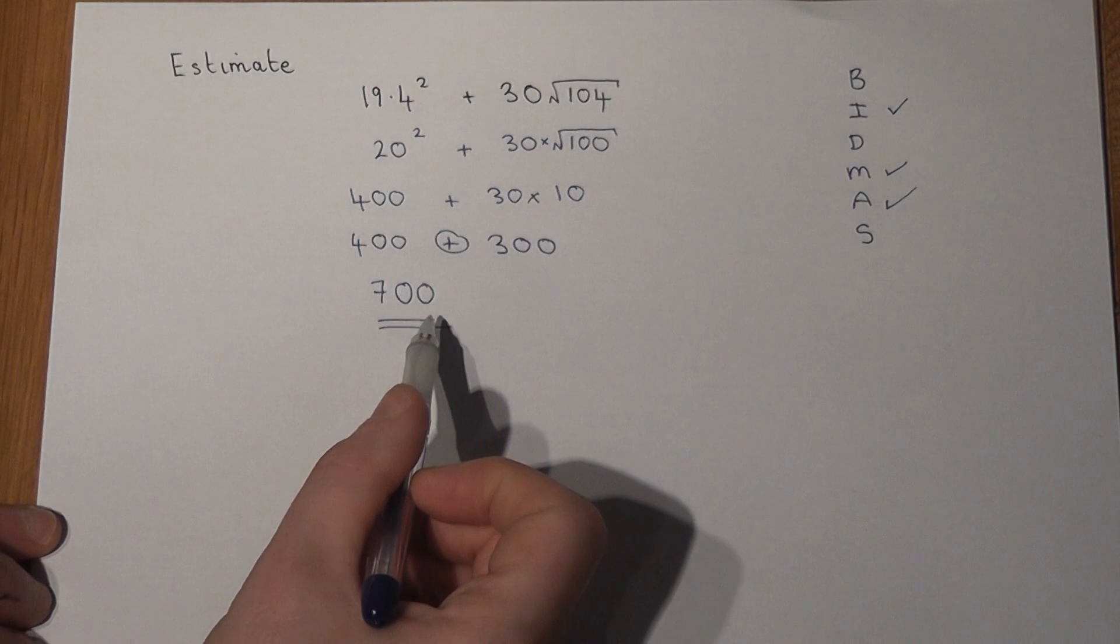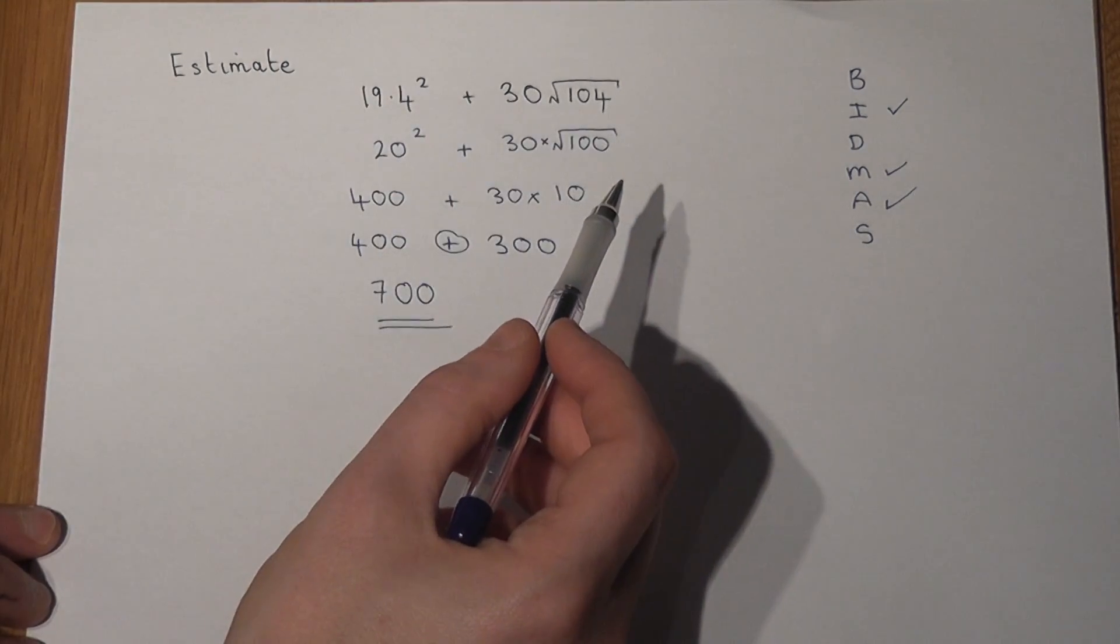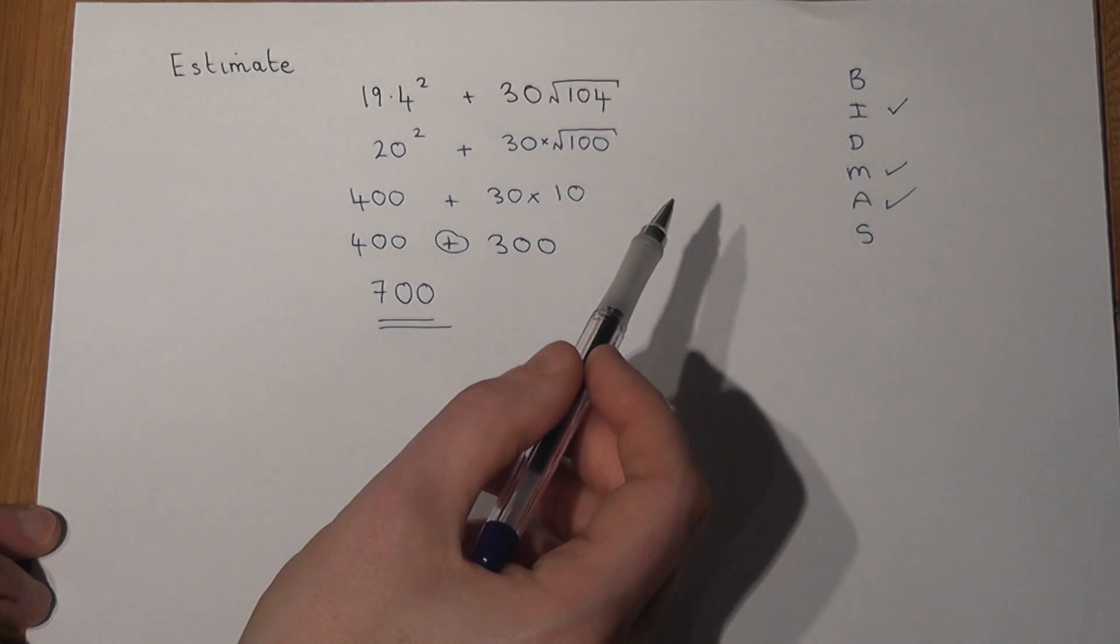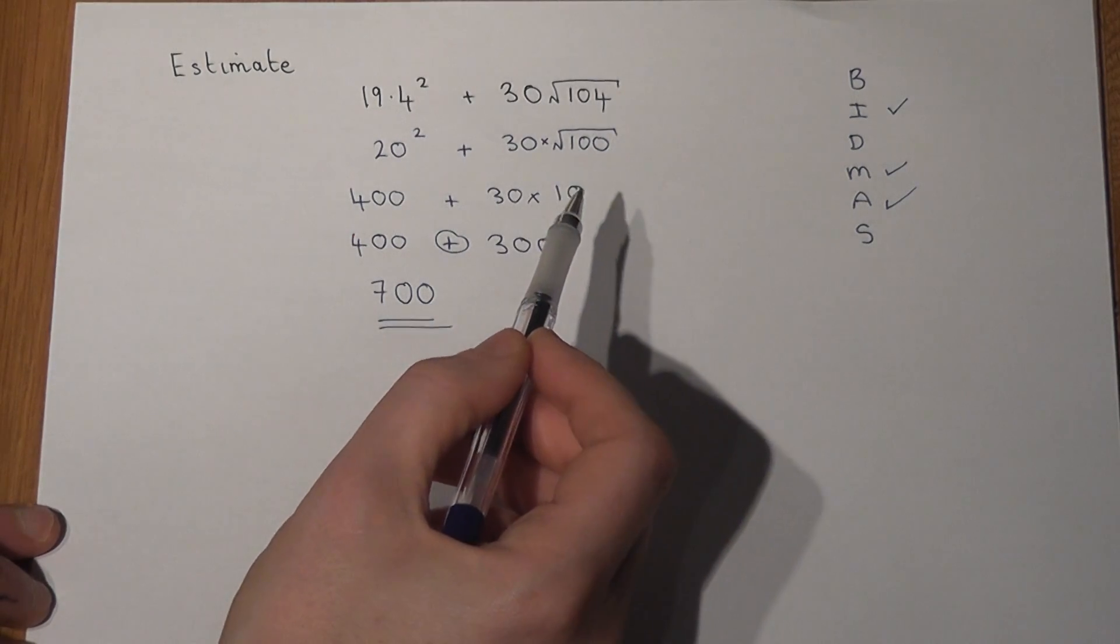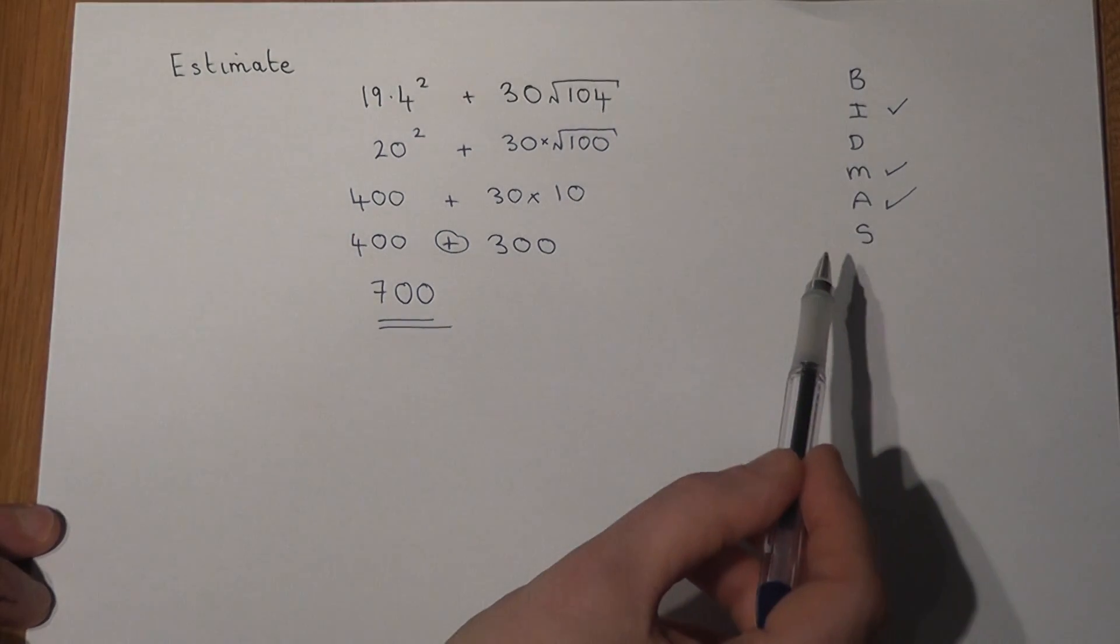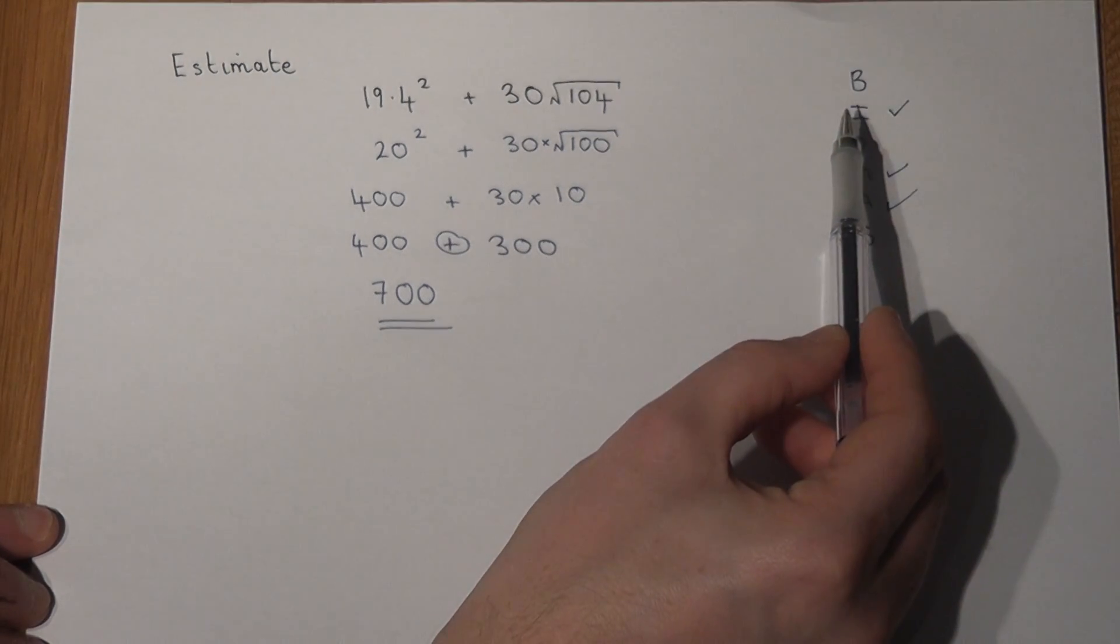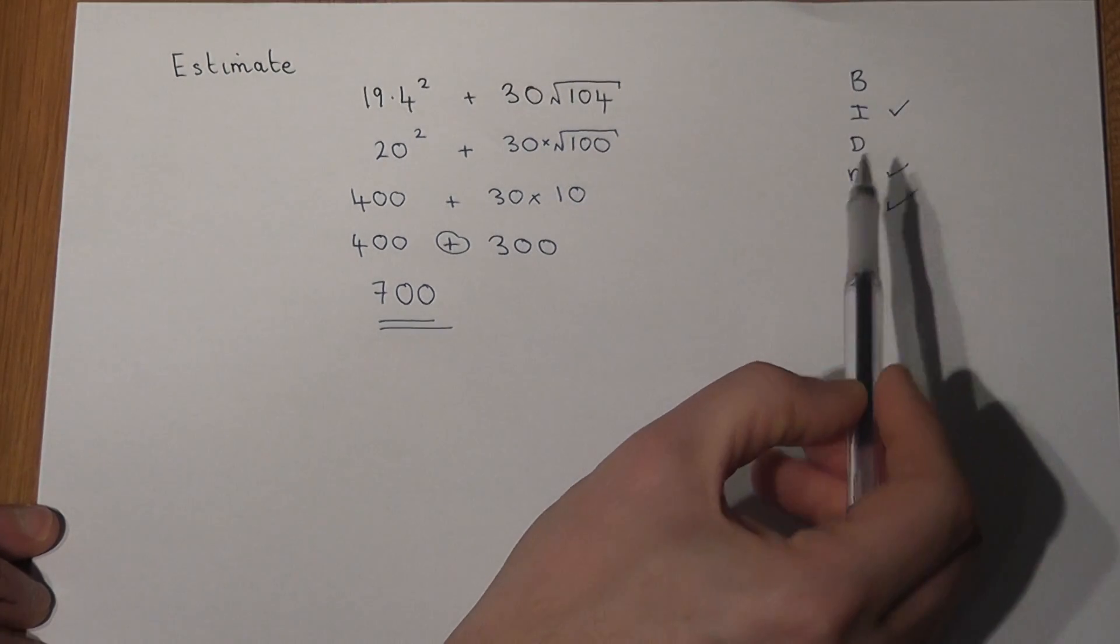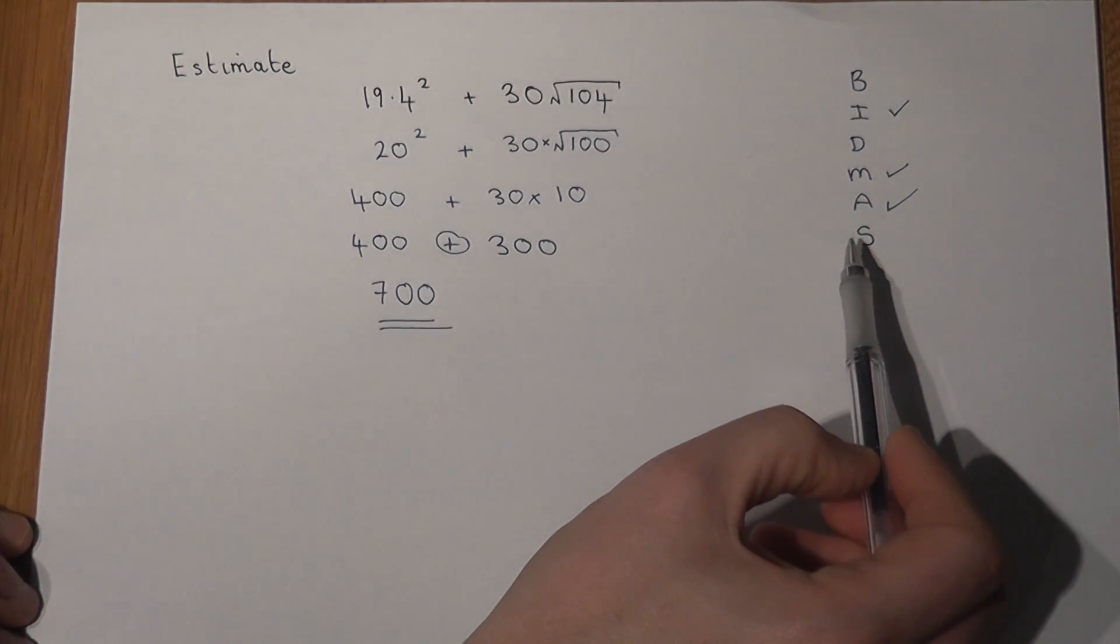And as a recap, we write all the numbers to one significant figure, we then work out each part of the question in order using BIDMAS to help us, where BIDMAS says we do brackets, then indices or powers, then division, then multiply, then we add, and then we finally subtract.